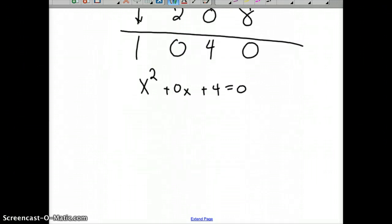So you're ready to solve that. X squared plus 4 equals 0, so x squared equals negative 4. We have two imaginary roots: x equals plus or minus 2i.